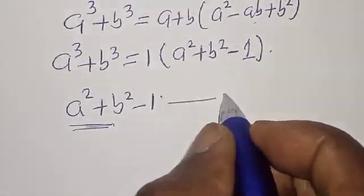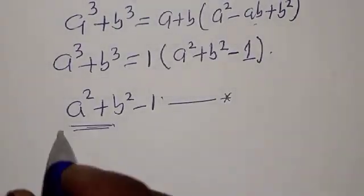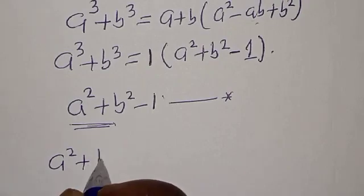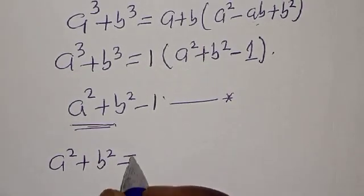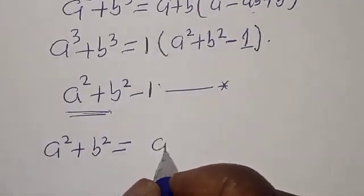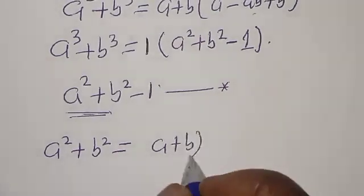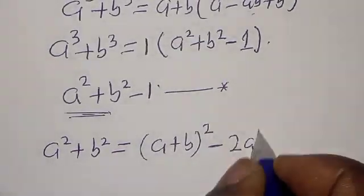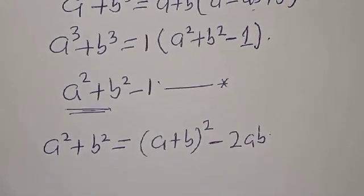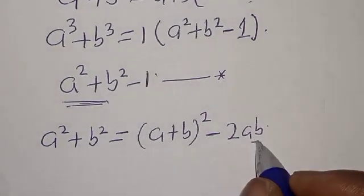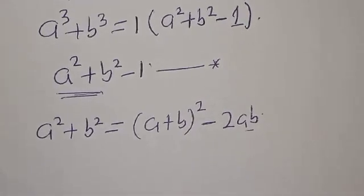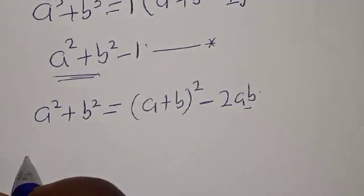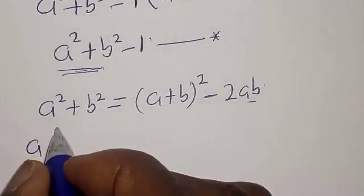Let's call this equation star. Now, a squared plus b squared is equal to a plus b squared minus 2ab. Our ab is 1 and a plus b is already known.